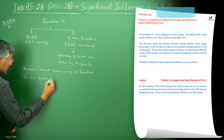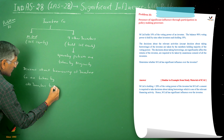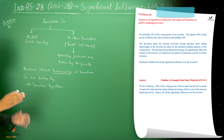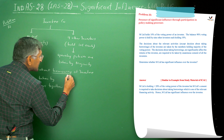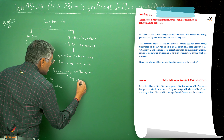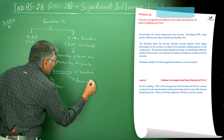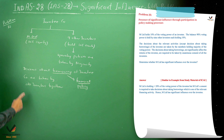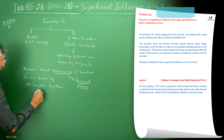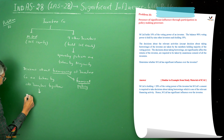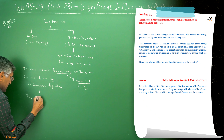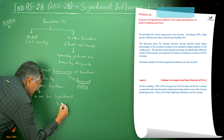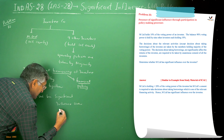Borrowing decisions are taken by all investors together, so M Limited also participates in borrowing decisions. Borrowing decisions relate to financial activity, which is equal to financial policy. Since financial decisions are taken with the participation of M Limited, we can say that M Limited has significant influence over the investee company.